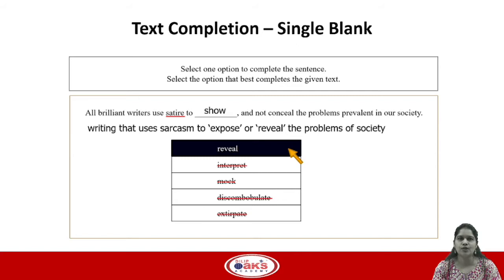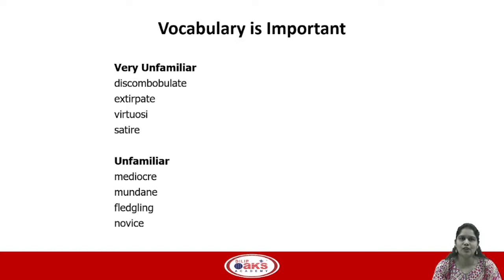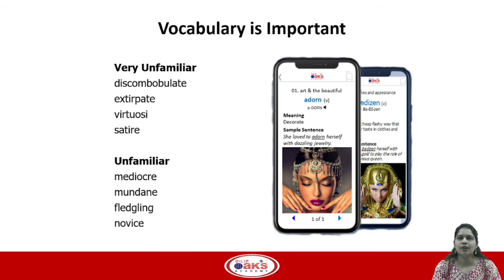What the sentence ultimately means is that brilliant writers use satire to expose or reveal the problems of society. Now let's look at the two difficult words: discombobulate means confuse, and extirpate means completely wipe out or eliminate — clearly not matching our anticipated answer. Based on these questions, you likely encountered words you didn't know. It becomes extremely important to start learning words from vocabulary apps like the Oaks vocabulary app, which gives you meanings, sample sentences, and images to help you learn GRE-relevant words more efficiently.